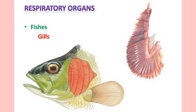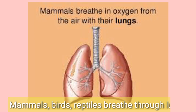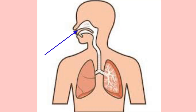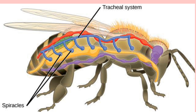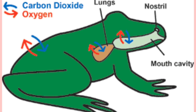Fish live in water and breathe through a pair of gills. Mammals, birds, and reptiles breathe through a specialized organ called lungs. We breathe through nostrils, and oxygen then passes to the lungs. Some organisms like earthworms breathe through their body surface. Insects breathe through small pores on the body called spiracles, which are connected to air tubes called trachea. Amphibians breathe through their moist skin when in water and breathe through lungs on land.